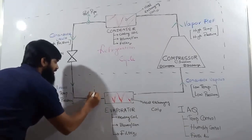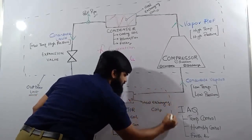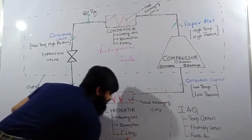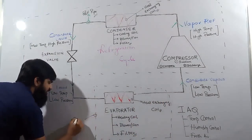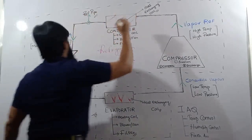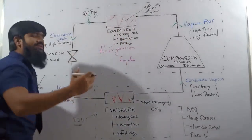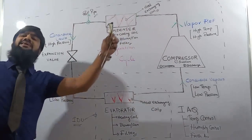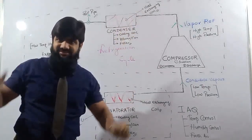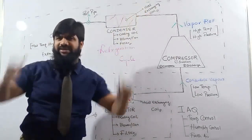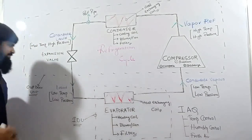In your indoor unit, you will find a heat exchanging coil, a blower or fan, and a filter. In the evaporator, the low temperature, low pressure liquid refrigerant enters the coil. What happens here is that the room rejects its heat to the coil, because the coil temperature is lower than the room temperature.